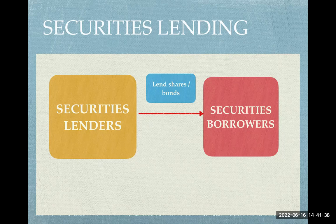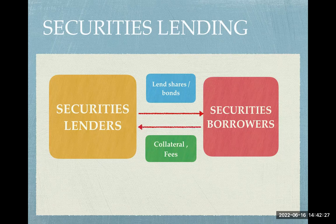Both securities lenders and borrowers are market participants — aggressive traders, custodians, holders of large assets under management. These could be pooled funds like mutual funds, pension funds, or endowment plans. Securities borrowers could be aggressive traders in hedge funds or investment banks. Because counterparty risk can be high, industry practices across different countries require that loans are almost always collateralized. Borrowers must give collateral to lenders and also pay fees calculated as a percentage of the loan amount multiplied by the duration and rate of interest.